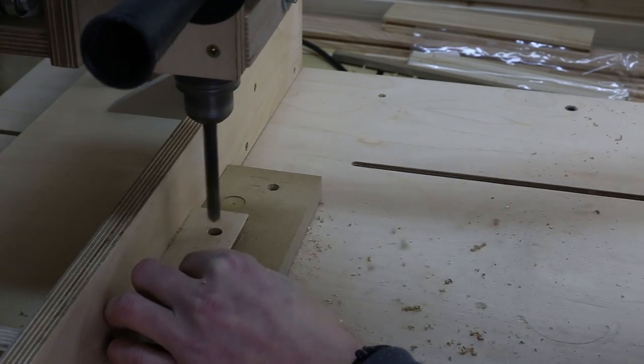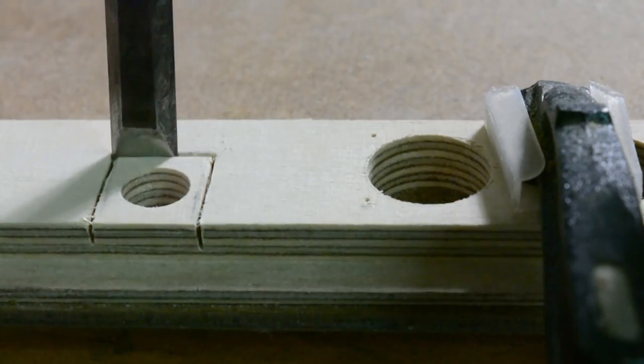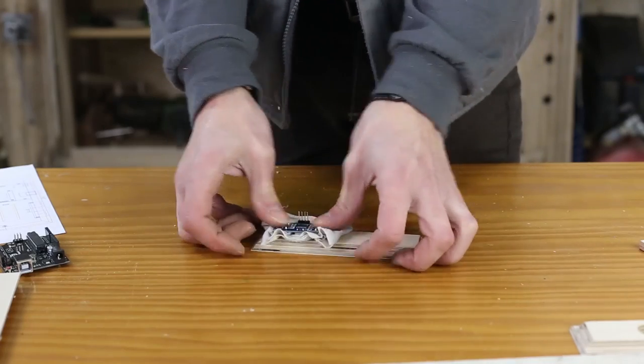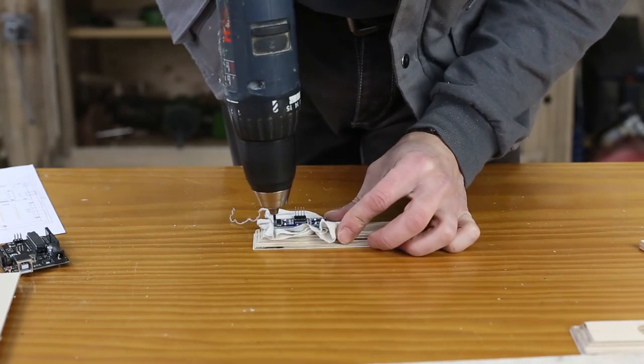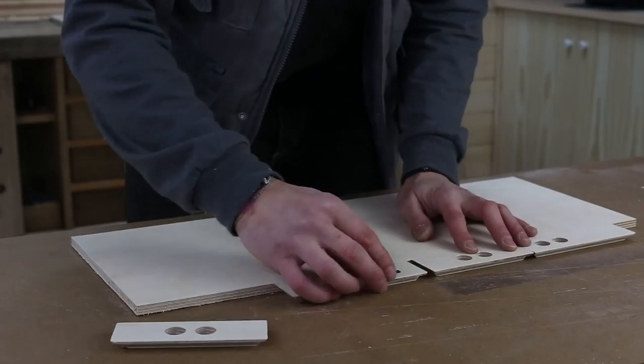Drill the holes for the sensors and for the USB cable, and use a chisel to adapt the place for the connector. You can use a little bit of fabric to make sure they fit exactly in the middle and mark with the drill.